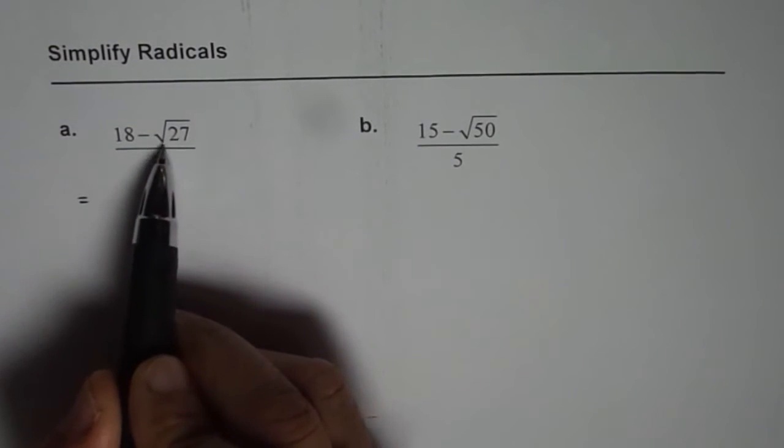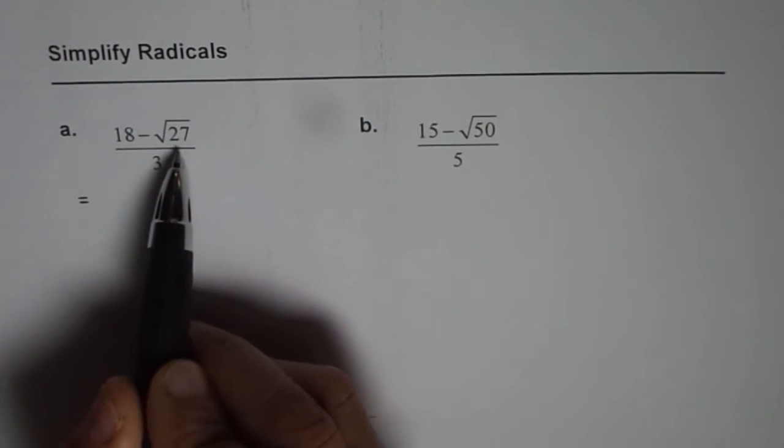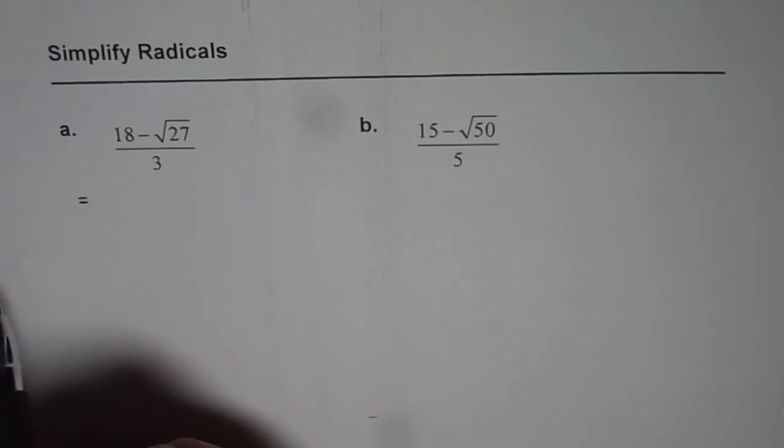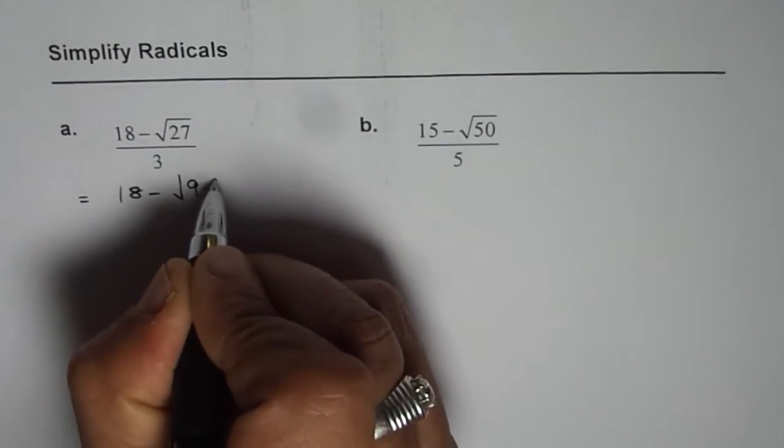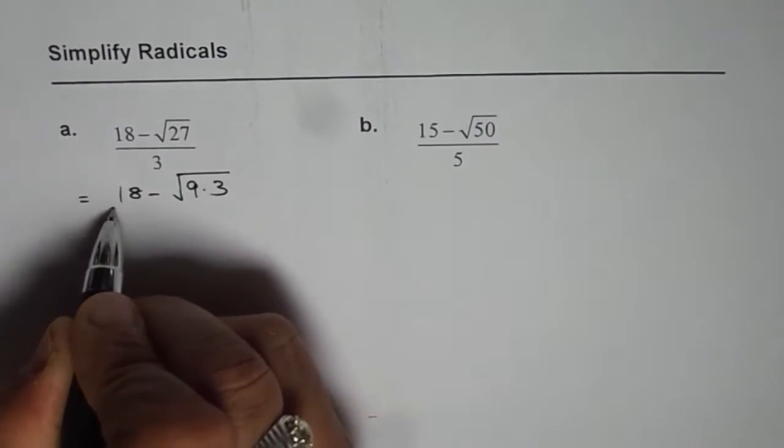Our strategy is to write this number under the square root sign as product of two numbers. One of them should be a perfect square. So 27 could be written as 9 times 3. 9 is a perfect square.